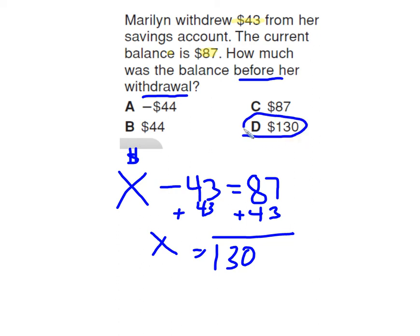So check it. $130 minus $43. She withdrew $43. She ends up with $87. $130 minus $43 equals $87. It works. So always check it, draw a picture, plug in your answers, see if it makes sense.